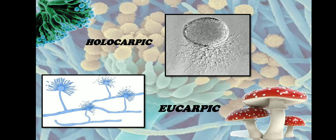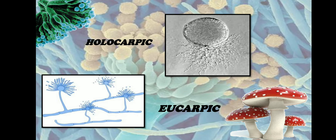During the vegetative phase, some cells act as vegetative cells while at the same time other cells form reproductive structures. So in eukarpic fungi, you can see the vegetative phase as well as the reproductive phase simultaneously. Such fungi are called eukarpic fungi. Examples are Aspergillus and Penicillium.